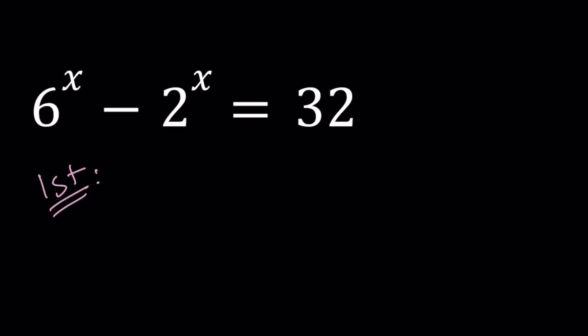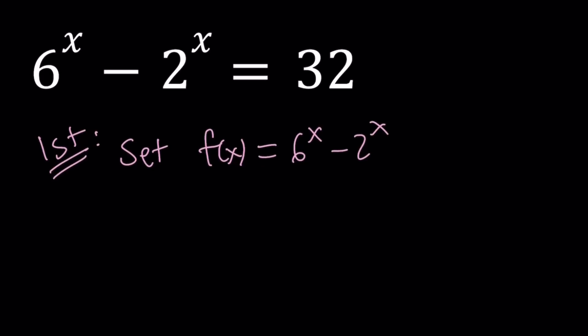For our first approach, I'm just going to define f of x as 6 to the power x minus 2 to the power x. And then I'm going to differentiate it. Why? Because I want to look at the behavior of the function, and a lot of times when we're looking for behavior of functions, such as whether they're increasing or decreasing on a certain interval, we do take the first derivative.